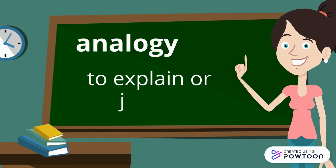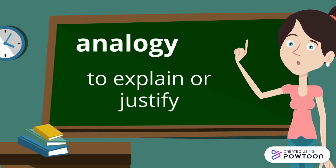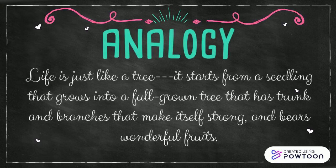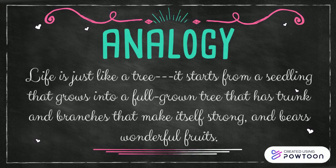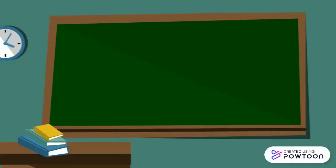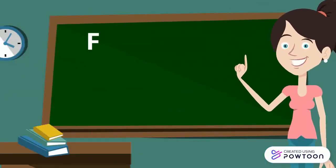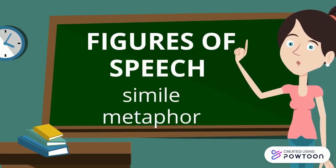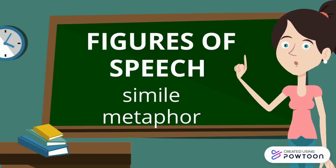The main function of analogy is not just to show comparison, but also to explain or justify. For example: life is just like a tree — it starts from a seedling that grows into a full-grown tree that has trunk and branches that make itself strong and bears wonderful fruits. Meanwhile, figures of speech like simile or metaphor only aim to show comparison without providing clear descriptions or explanations.